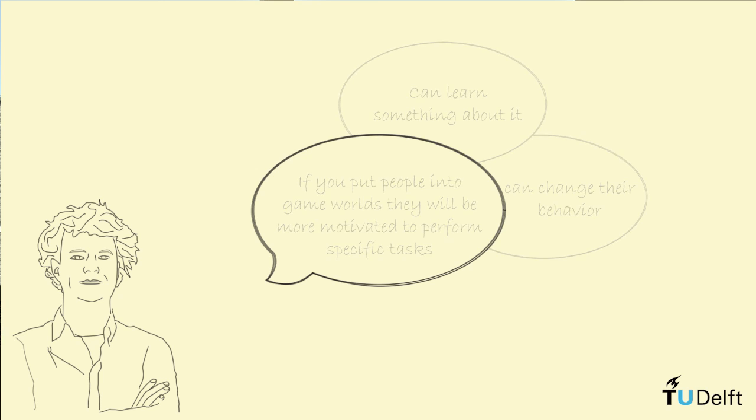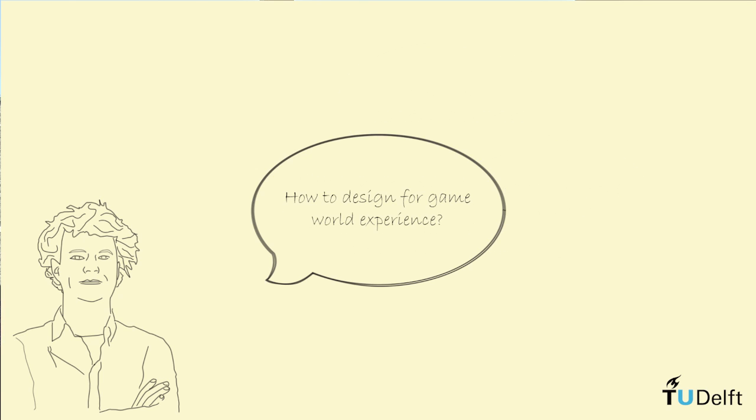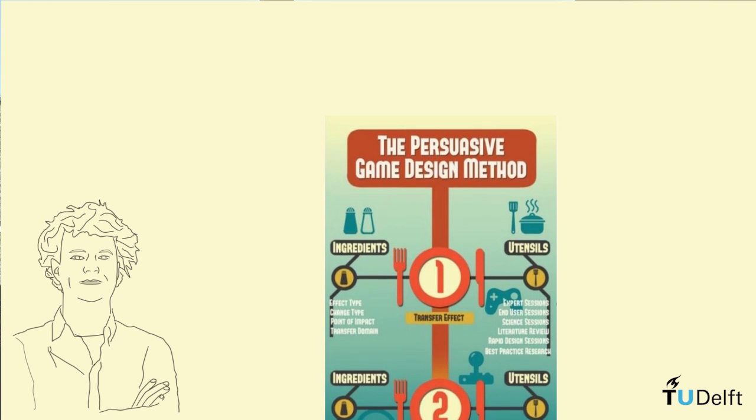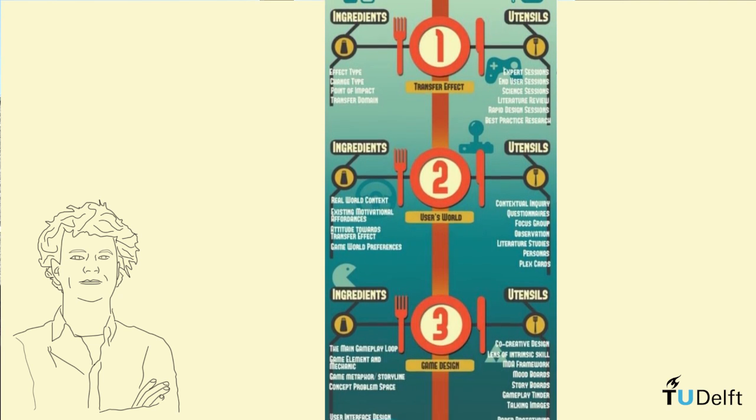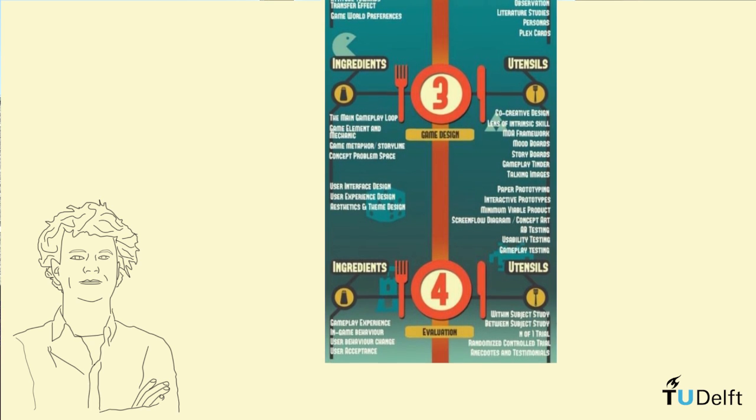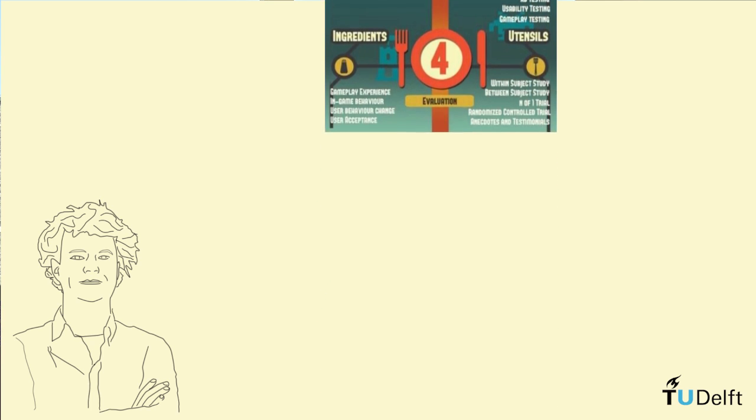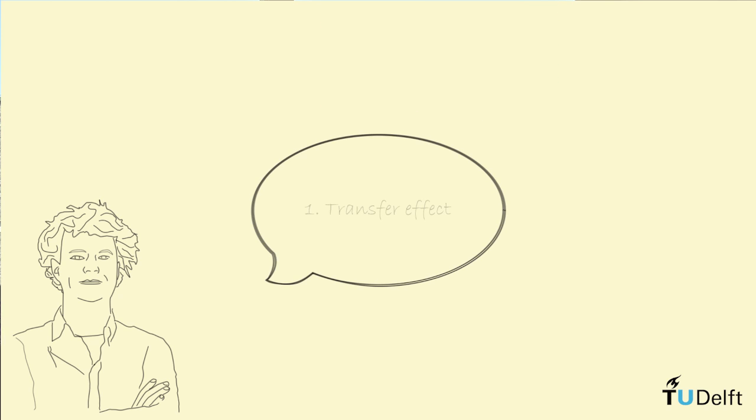So that's the next question. First, we understood what are game world experiences and next is how to design for that. For that, it was this year that we wrote a paper about a method how to design for persuasive games. We made it, we wrote it together with a design company and also with a design method specialist. And we summarized it in this very colorful and playful recipe. It's a recipe for designing persuasive games. The first dish is that you obtain the transfer effect.